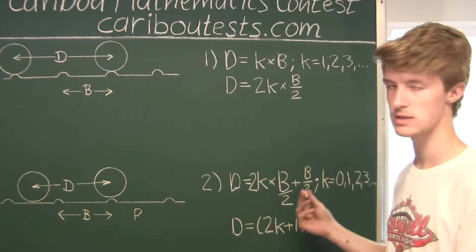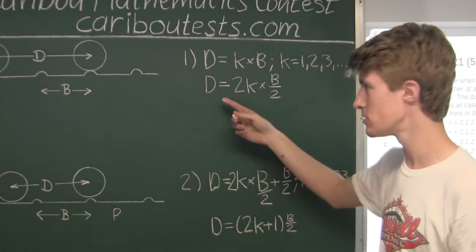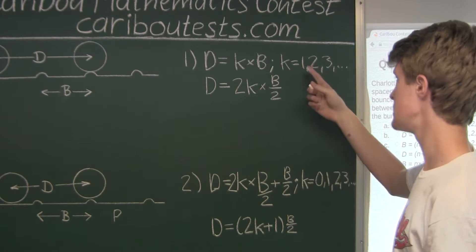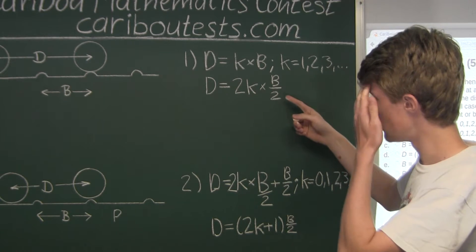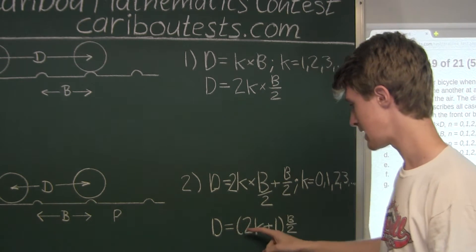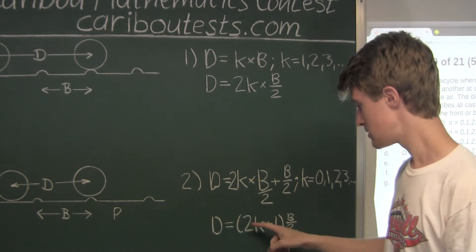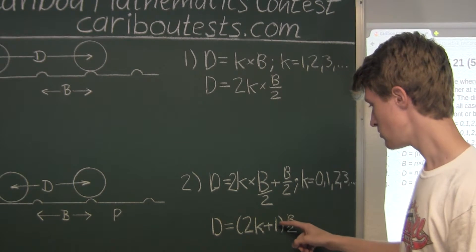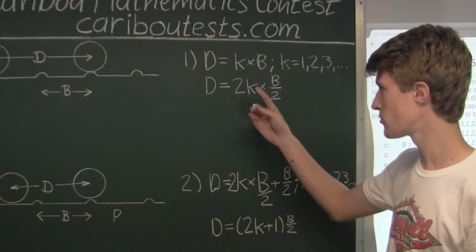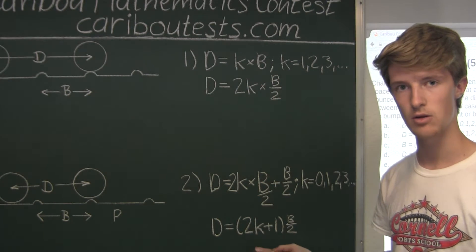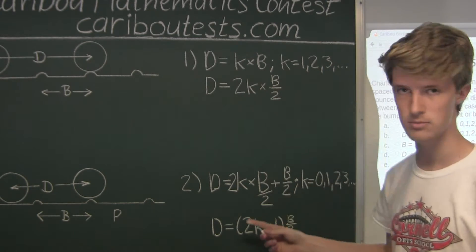So let's think about what these formulas represent. Here we have 2K times (B over 2), which represents all even multiples of B over 2, because whatever K value we have — 1, 2, 3, whatever — when you multiply by 2, that number becomes even. So we have an even multiple of B over 2. Whereas in the second formula, whatever positive integer K is, if you multiply by 2 we get an even number, then adding 1 we get an odd number, so this represents all odd multiples of B over 2. So we have one formula for even multiples and one formula for all odd multiples of B over 2.